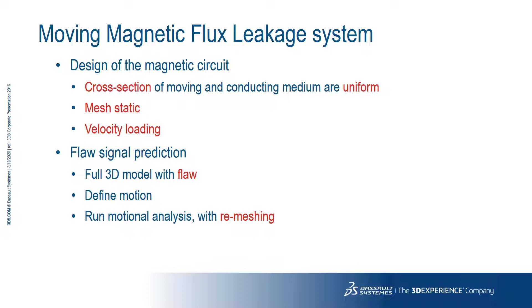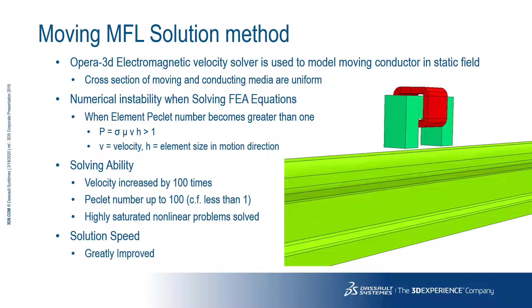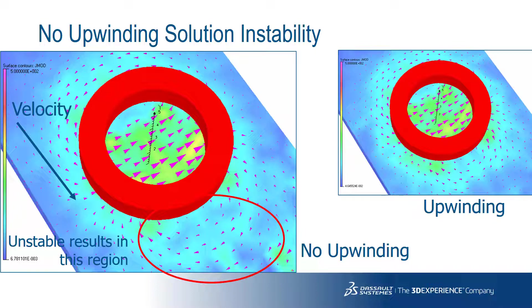We'll now look at these two analysis types and what they might be used for. When running a problem whereby the mesh is constant and the relative motion is applied as a velocity loading in a standard FEA solver, you'll risk non-convergence of the solution. The main reason is that the diagonals of conventional FEA equations approach zero or even become negative when the velocity increases. The Opera 3D solver, on the other hand, makes use of a technique called upwinding. This has allowed greater speeds to be defined without the need for overly refined meshes, and hence the solution times have been greatly improved. These two pictures show a coil moving at speed over a conducting plate: without upwinding, you can see instabilities in the area ahead of movement; when upwinding is enabled, as in Opera 3D, the instability is removed.